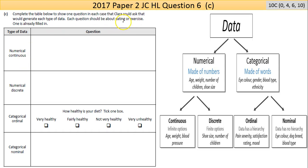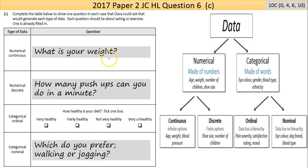To elicit a numerical continuous response about health or exercise, you need a question that generates a number that can change and can be a decimal. Examples include: 'What is your weight?', 'What is your height?', or 'How many miles do you walk every day?' For numerical discrete, you want a definite whole number with no decimals — you don't do one and a half push-ups, so 'How many push-ups can you do in a minute?' works well. 'What is your pant size?' could also work.